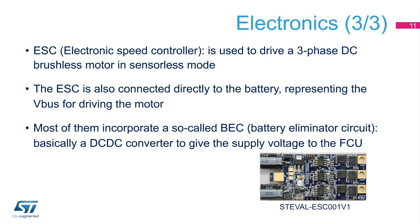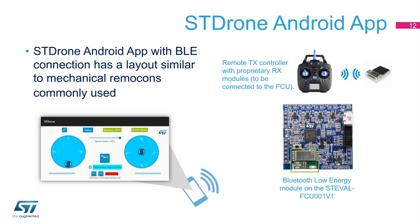It is possible to control drones with smartphones or RIMACONs. ST has developed an Android application to pilot the ST EVAL FCU-001V1. The ST Drone app, with BLE connection, has a layout similar to mechanical RIMACONs commonly used. By modifying the settings, it is possible to customize the interface to each user's preferences. The source code is open source and available on github.com.